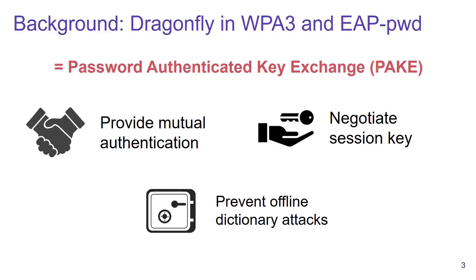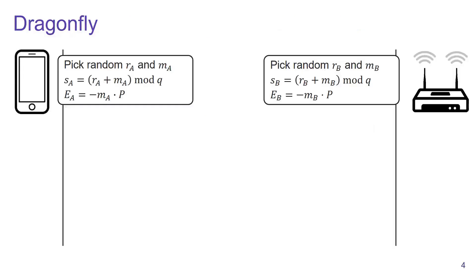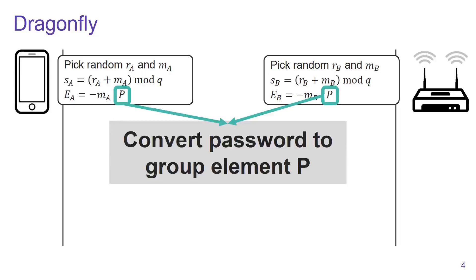So how does the Dragonfly handshake work? Before executing the handshake, the password, which may be stored in ASCII or Unicode, needs to be converted into a group element P. This group element can then be used in the cryptographic calculations of the handshake.